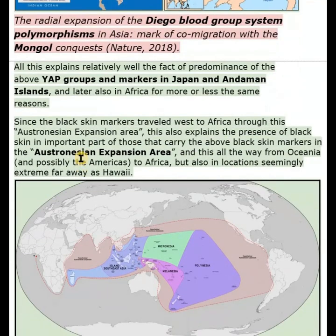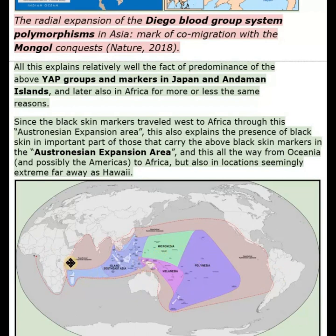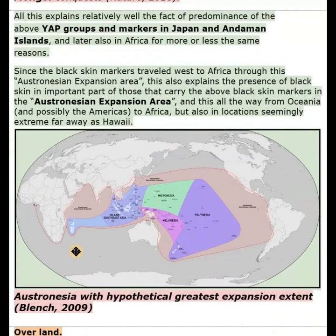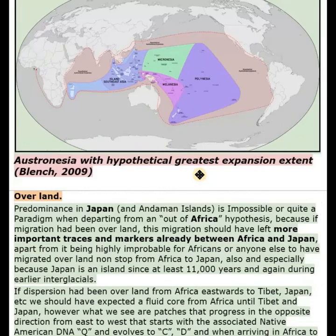Since the black skin markers traveled west to Africa through this Austronesian expansion area, this also explains the presence of black skin in an important part of those that carry the above black skin markers in the Austronesian expansion area, all the way from Oceania and possibly the Americas to Africa, but also in locations seemingly extreme and far away, such as Hawaii.